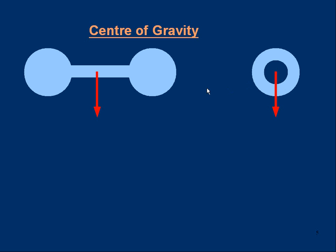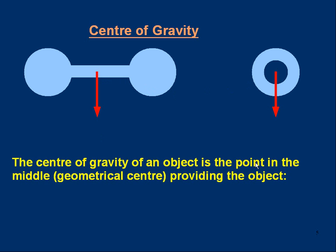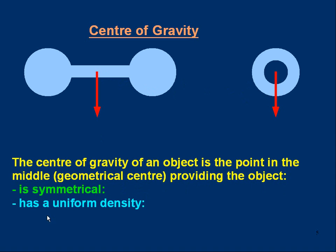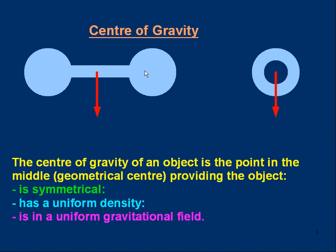You may ask yourself: is the center of gravity always simply in the middle of an object? The answer is — it depends. The center of gravity is at the geometrical center, providing certain conditions are satisfied. First, the object must be symmetrical. Second, it must have a uniform density — the same density at all parts. If the left sphere is lead and the right is polystyrene, the average position of the total weight is way over to the left. We also assume a uniform gravitational field, so the strength of gravity is the same everywhere — about 9.8 meters per second squared.